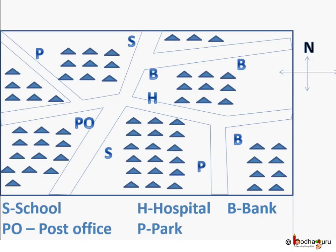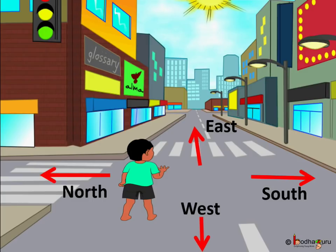Aman is lost in an unknown place. He has the map of the place, and the map has directions. Now, which is east and which is west? It is 6 o'clock. So if he stands facing the sun, he would be facing east. His back would be facing west. His right hand would be towards south and left hand would be towards north.